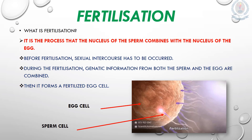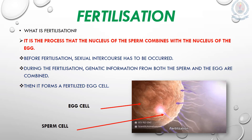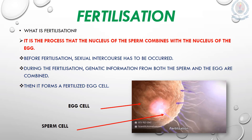A poor diet also affects the quality and quantity of sperm cells produced in males. The sperm cells may not be able to swim fast enough to reach the egg, and the number of sperm cells discharged during sexual intercourse may also decrease. Drugs such as cocaine and nicotine can affect either the quality or the quantity of sperm cells produced. Tobacco or cigarettes, which contain nicotine, may also affect ovulation and the quantity of eggs in females.